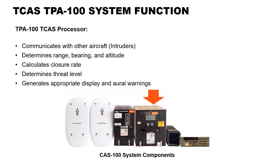Using this data, TCAS predicts the time to and the separation at the intruder's closest point of approach, also known as CPA. When TCAS predicts that certain safe boundaries may be violated, it issues a Traffic Advisory (TA) to alert the crew that closing traffic is in the vicinity. If the intruder continues to close, TCAS issues a Resolution Advisory (RA) to obtain or maintain safe vertical separation between your aircraft and the intruder. TCAS then generates appropriate display and oral warnings.